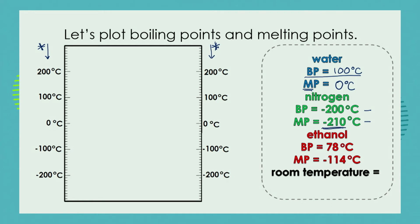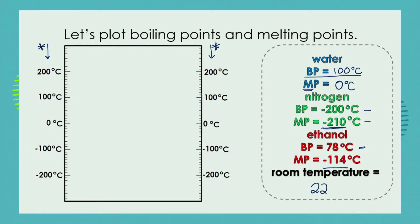Ethanol's boiling point is 78 degrees C and its melting point is minus 114 degrees C. Room temperature varies — it's higher in summertime, lower in winter, and varies throughout the day — but on average we take room temperature to be about 22 degrees C.